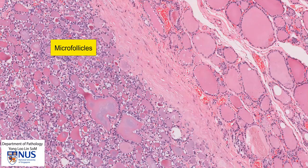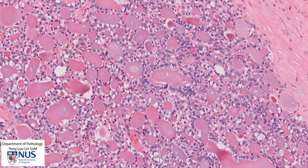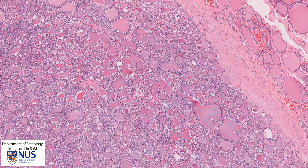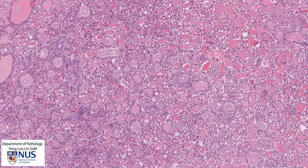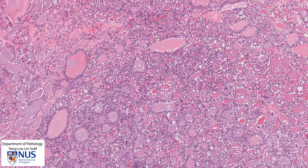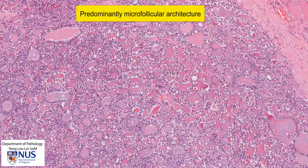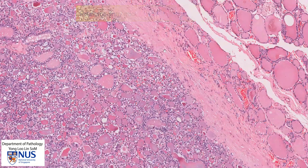This tumor is predominantly composed of microfollicular structures, and they are also mixed with some small follicles and even some larger follicles or macro follicles. It's not a homogeneous picture. However, the predominant architecture is that of microfollicles. So we have a tumor which is completely encapsulated with a predominantly microfollicular architecture. It looks quite different from the adjacent non-neoplastic thyroid.